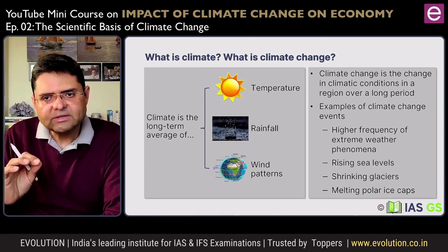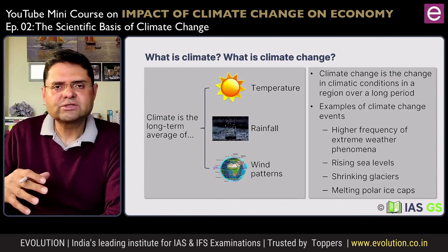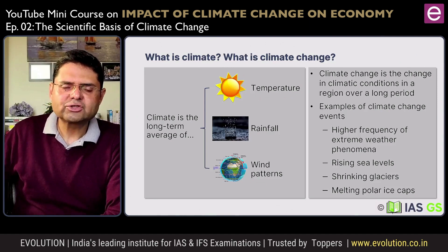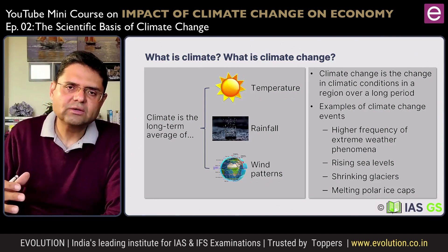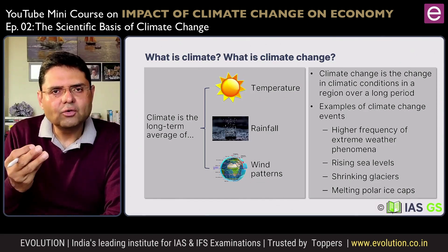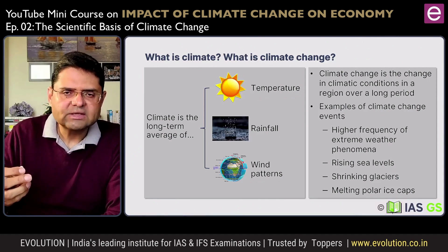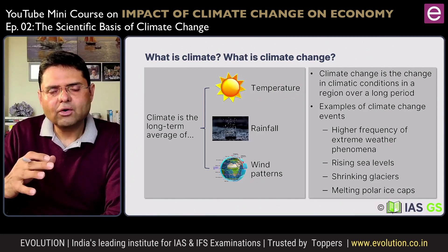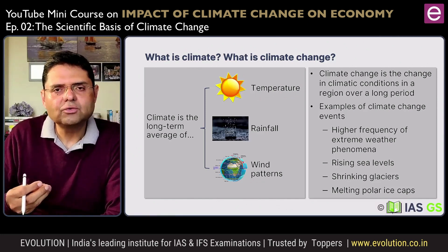Climate change shows today as very high frequency and intensity of extreme weather phenomena — either extreme heat waves, extreme snowfall, increased intensity and frequency of cyclones, hurricanes, and so on. Then we look at rising sea levels, melting ice caps on the poles, melting glaciers and so on. They all are vivid examples of what climate change is doing to planet Earth.